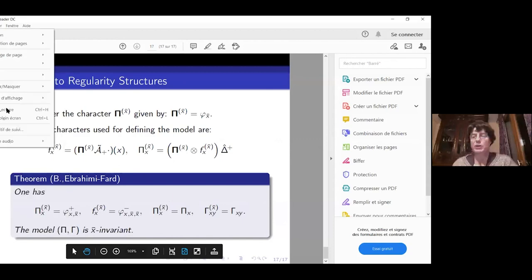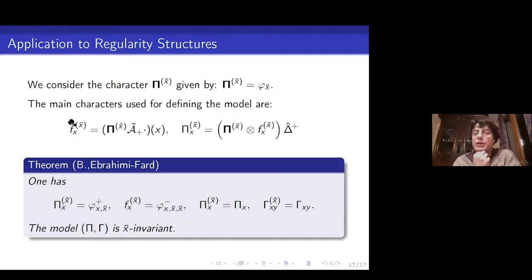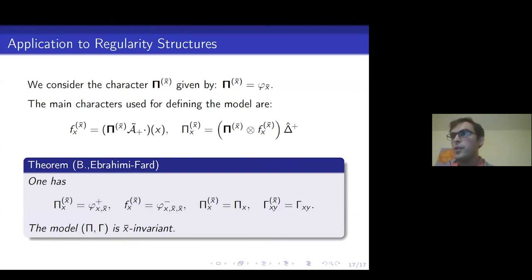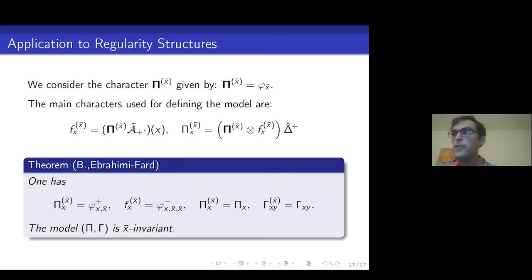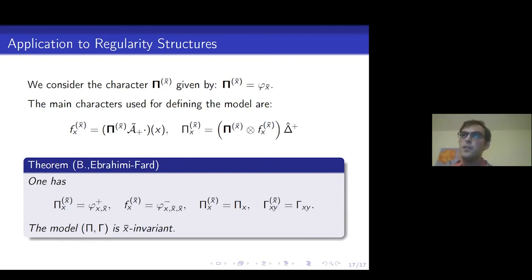Question from the audience: about the two Bogolubov recursions in co-interaction — is there a general framework? One needs co-interacting bialgebras giving two groups of characters, whose semi-direct product can be formed. One can write a Bogolubov recursion on this semi-direct product, either starting with recentering then renormalization, or switching the order. The co-interaction tells you both orders are available. This has not been fully formalized yet — it was more an observation in the paper — but it could be pushed into a full framework.